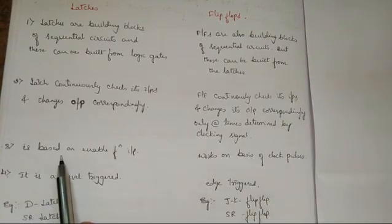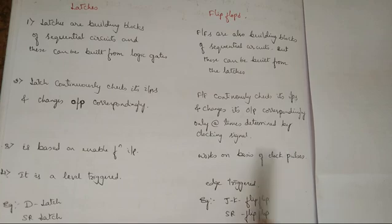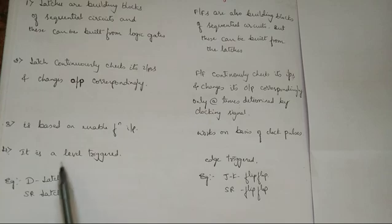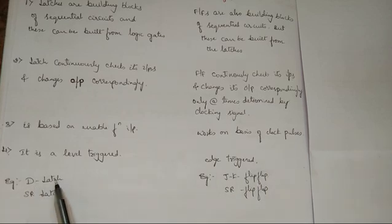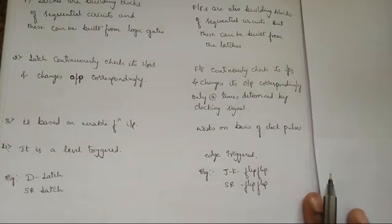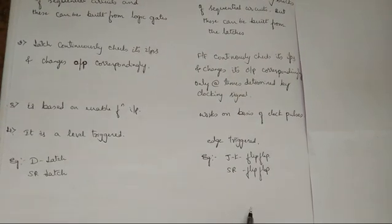Latches are based on the enable function input, whereas flip-flops work on clock pulses. The fourth difference is that latches are level-triggered whereas flip-flops are edge-triggered. Examples of latches include D latch and SR latch. Examples of flip-flops include JK flip-flop, SR flip-flop, and T flip-flop. If you have time, mention a simple block diagram of each. This completes the solution for 3a.